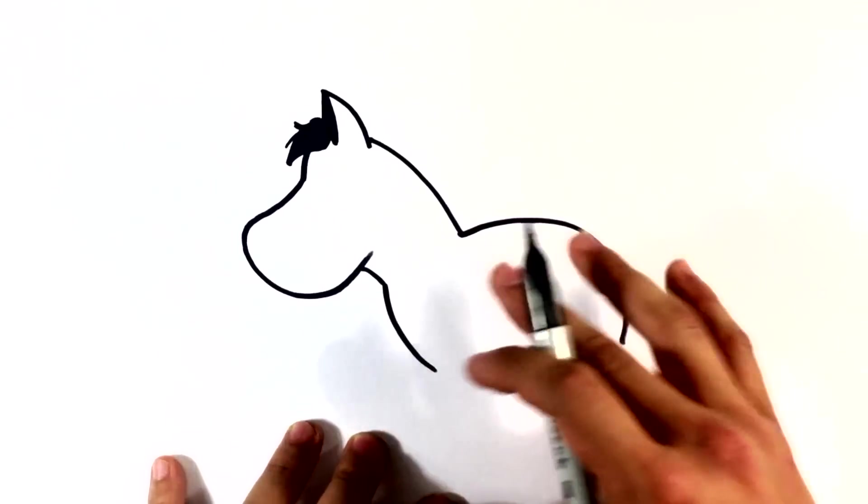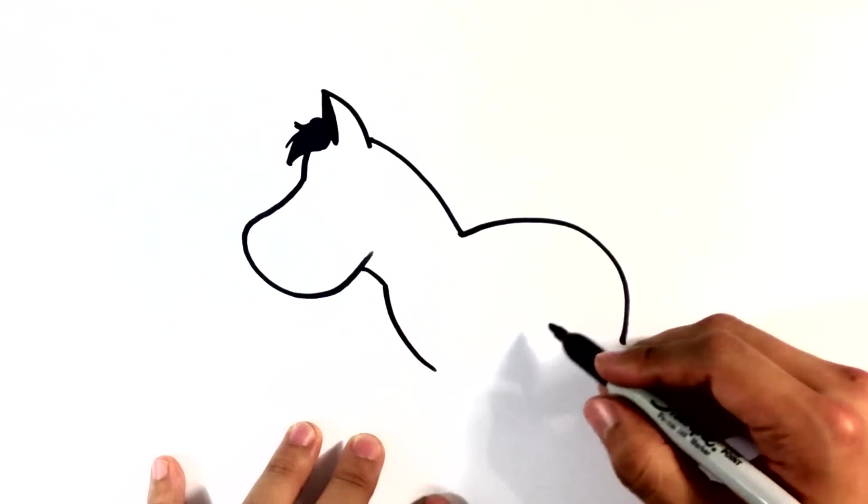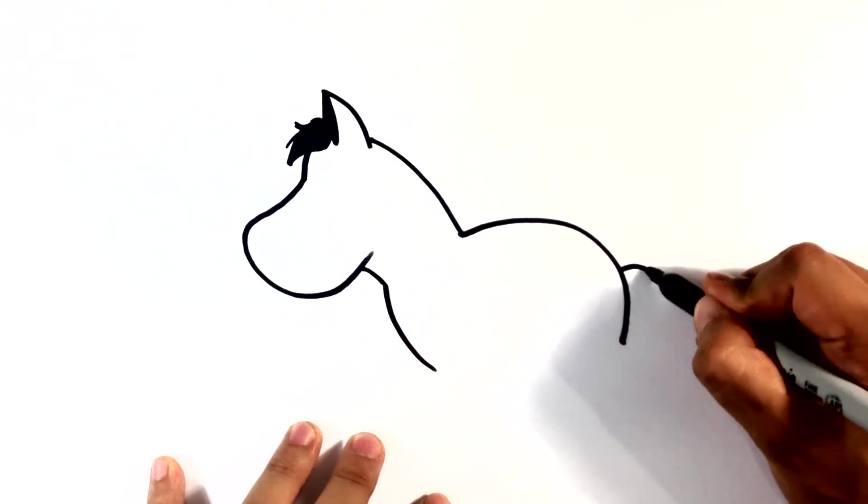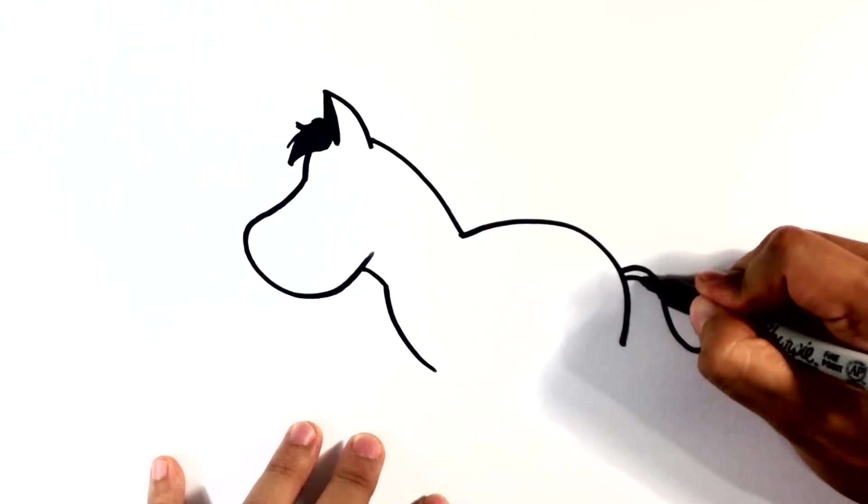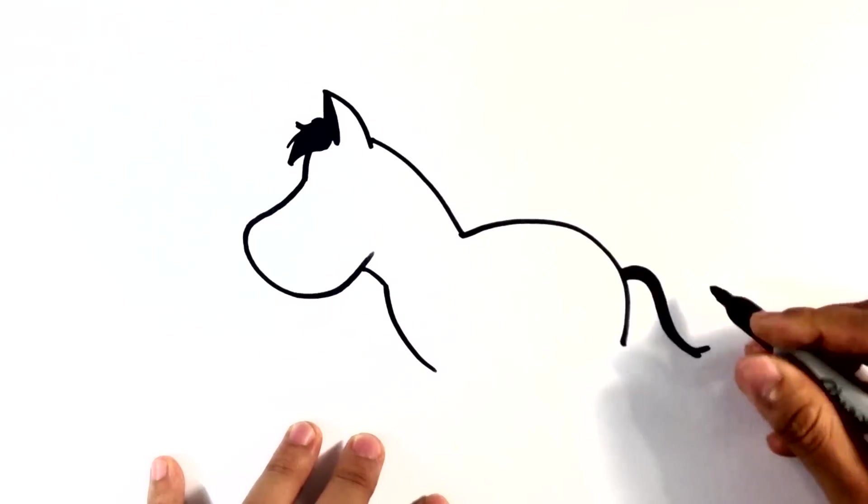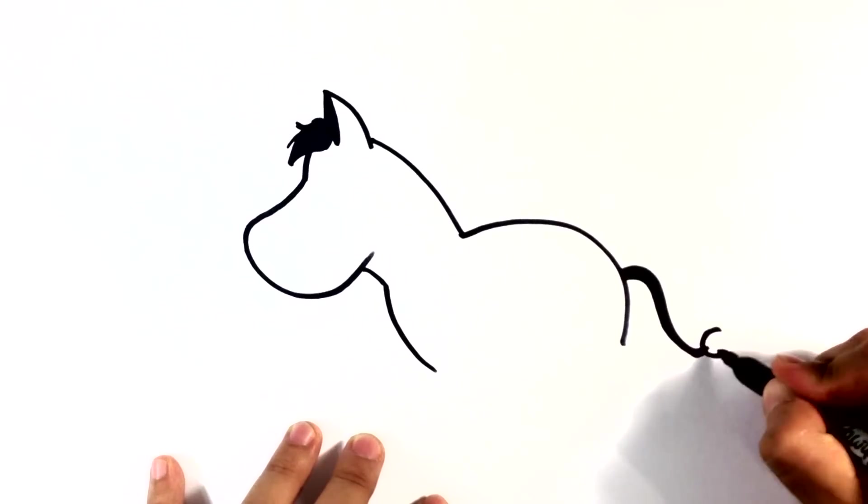Back of the whole body. Let's see, the tail. The tail has kind of a bushy end.